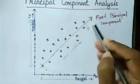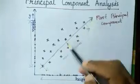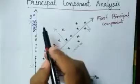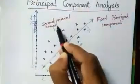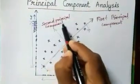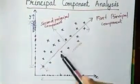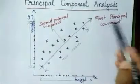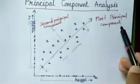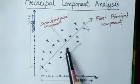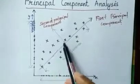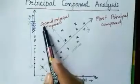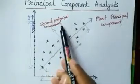The line which is having maximum variance of data points is called the first principal component, and the line orthogonal or perpendicular to the first principal component is called the second principal component.